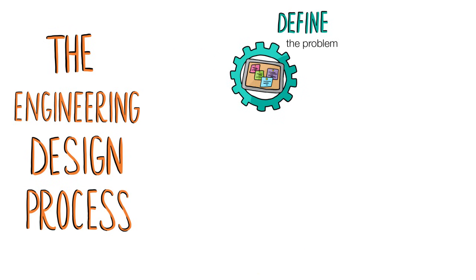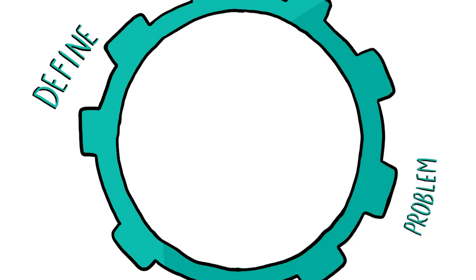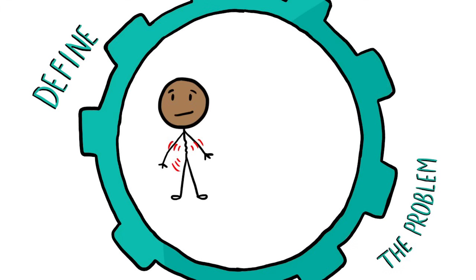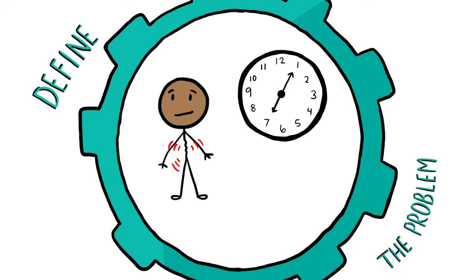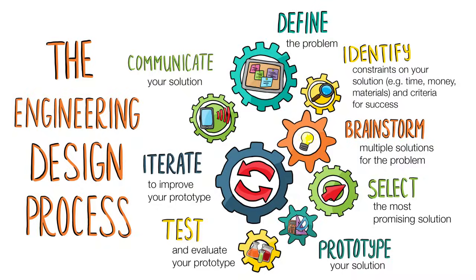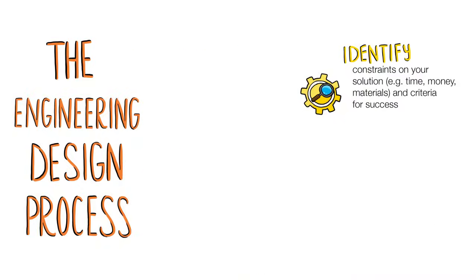First, you define a problem or need. In this case, the problem is you're hungry and you've got people coming over in half an hour and they might be hungry too. Next, you do some research to figure out the design requirements and your limitations.